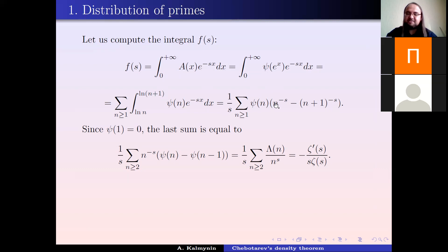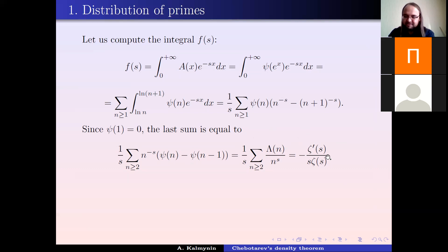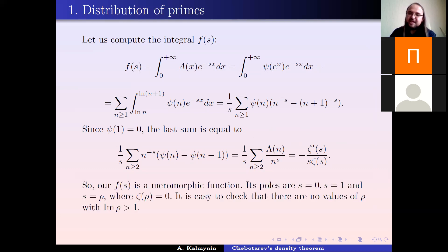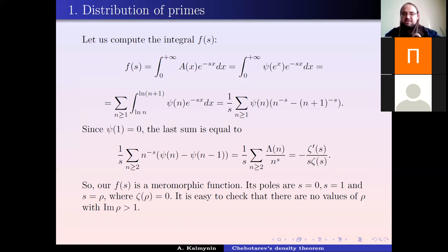Since ψ(1) = 0, this last sum can be rearranged as a sum over n ≥ 2 of n^{−s} · (ψ(n) − ψ(n−1)), and this difference is exactly λ(n). So the resulting integral F(s) equals minus the logarithmic derivative of the Riemann zeta function. What we need to check now is that subtracting the singularity of F(s) at s = 1 gives a function with a continuous extension to the line Re(s) = 1.